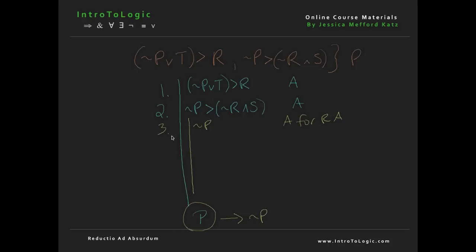Now that we have not p, we can use that to arrive at the following with modus ponens: not r and s from 2, 3, mp. And then we could also use not p to get not p or t from 3 or introduction. We can then use that to derive r from 1, 5 modus ponens.